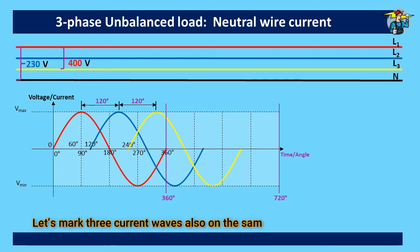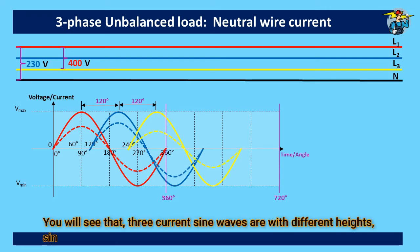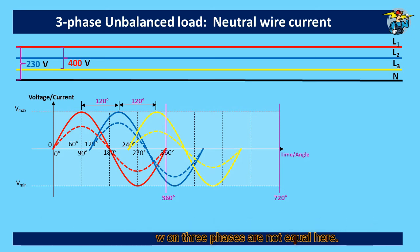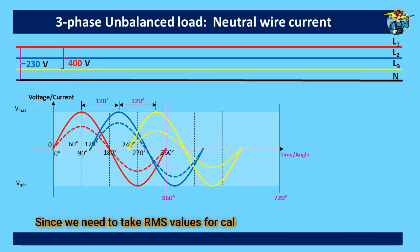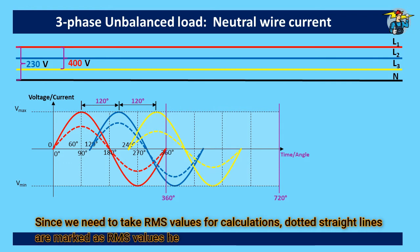Let's mark 3 current waves also on the same graph with dotted lines. You will see that 3 current sine waves are with different heights, since current values flow on 3 phases are not equal here. Since we need to take RMS values for calculations, dotted straight lines are marked as RMS values here.